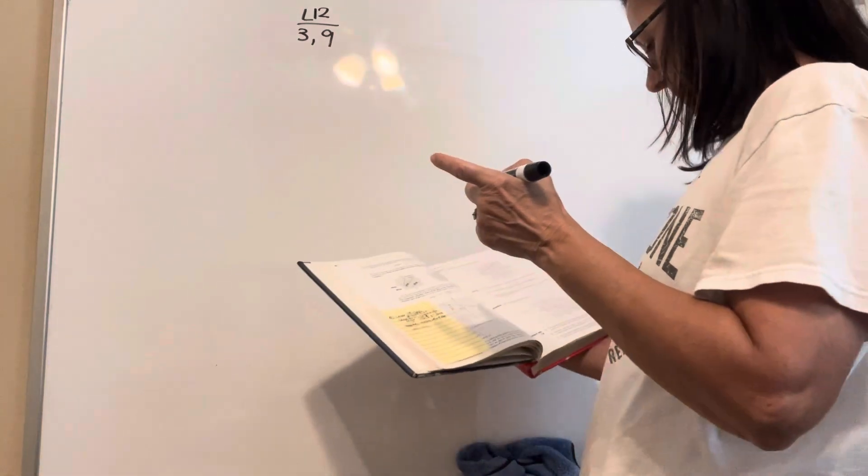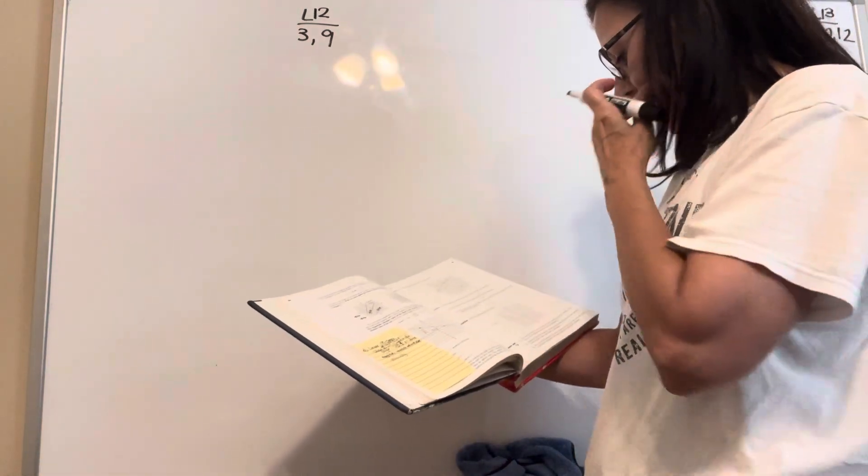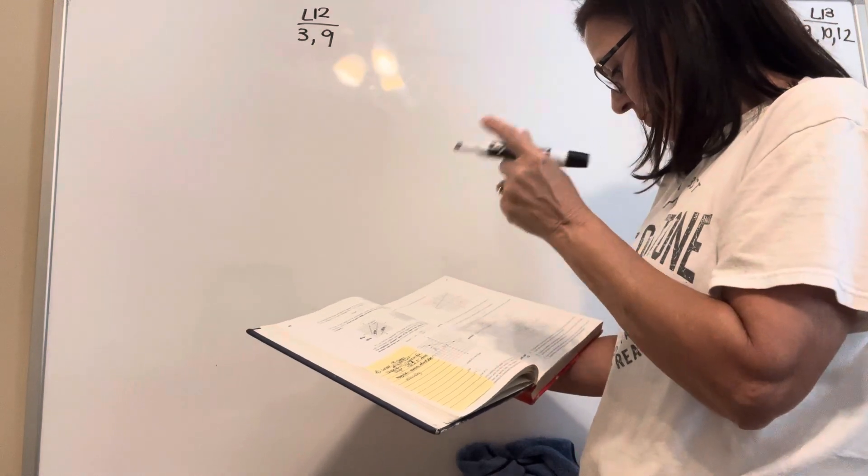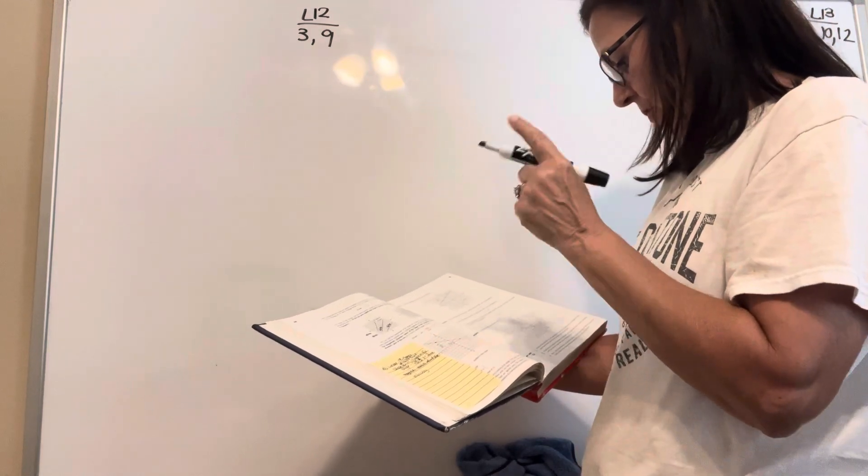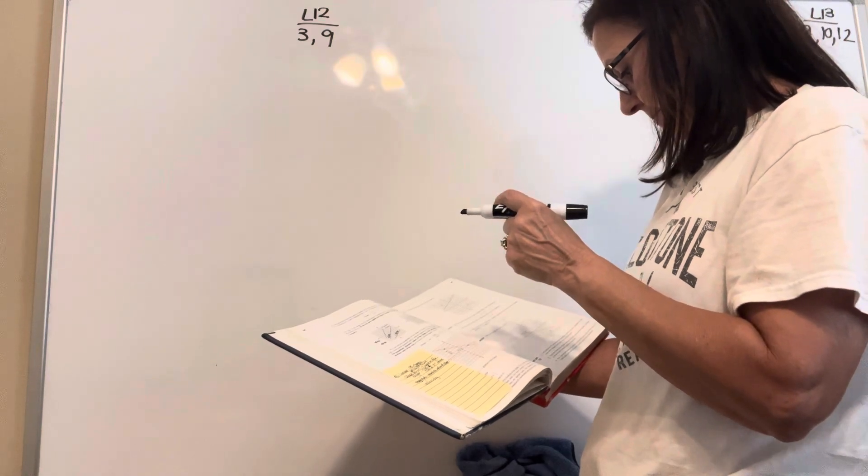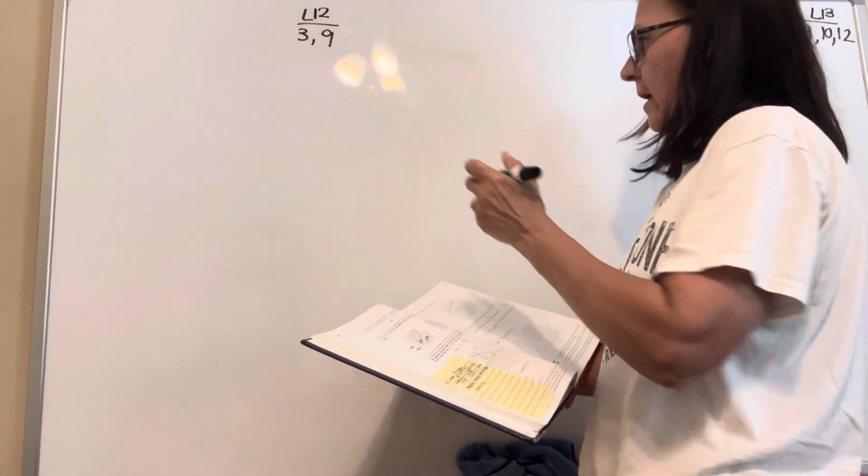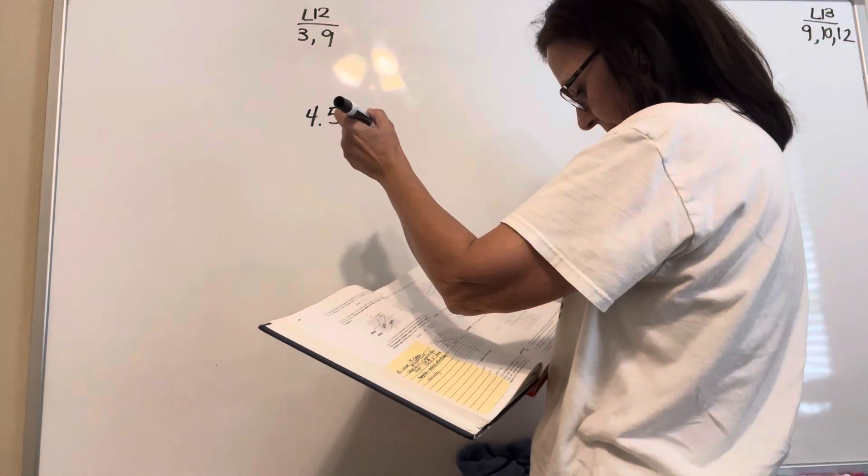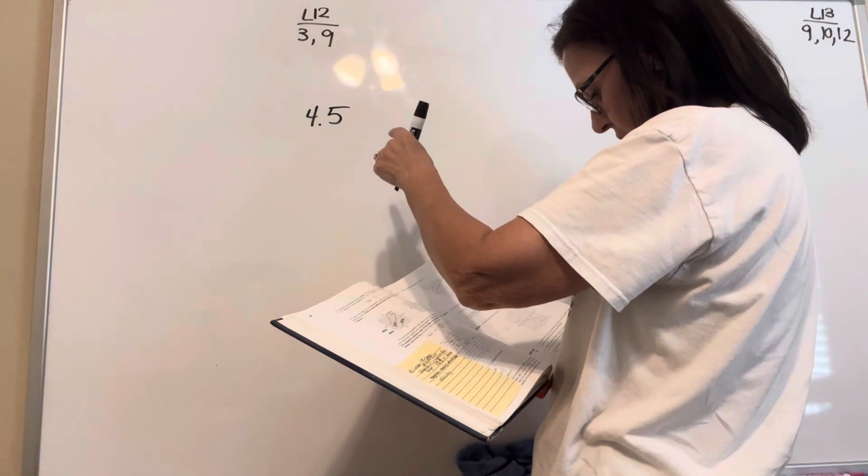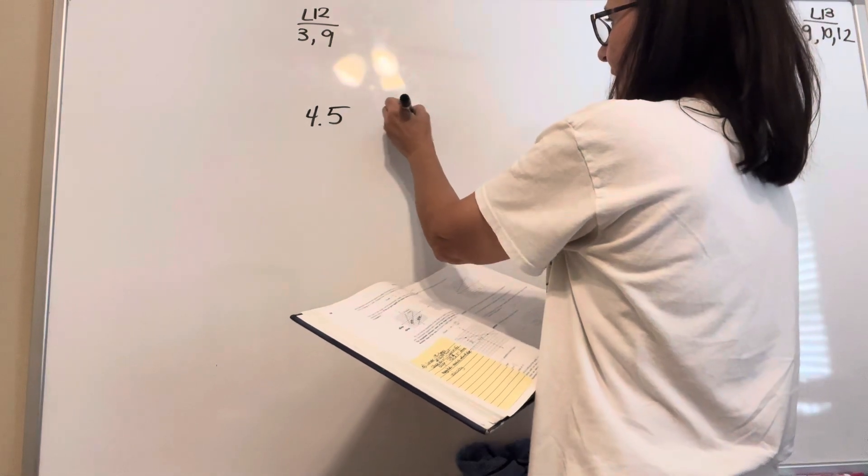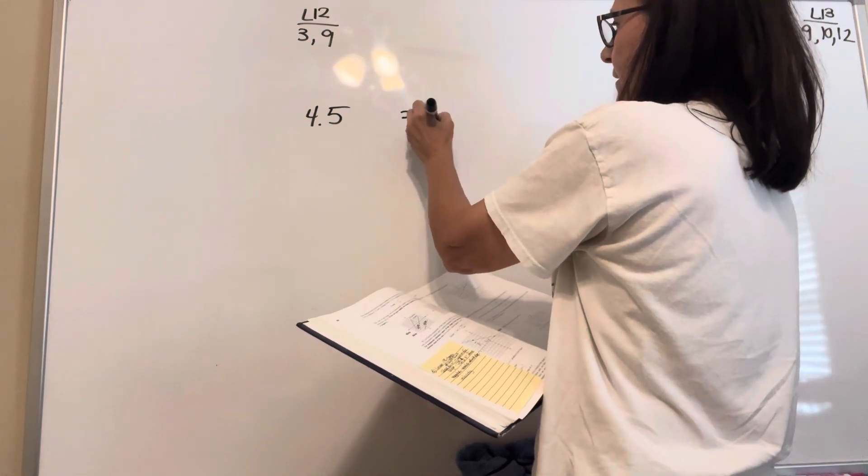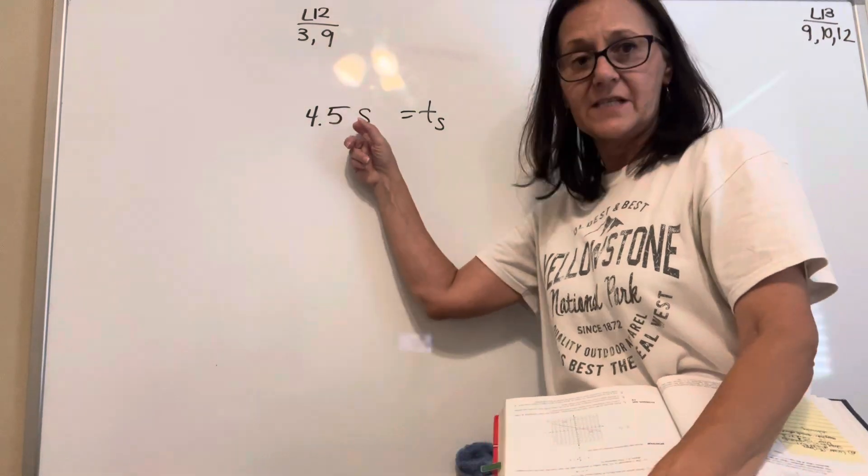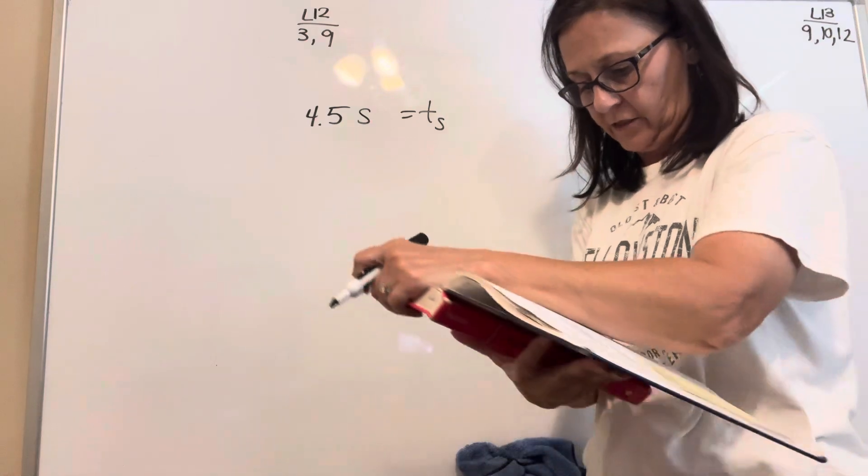For a given performance, four and a half times as many tickets were sold than were seats. Okay, so 4.5 times the number of seats equals the number of tickets sold. Got it?